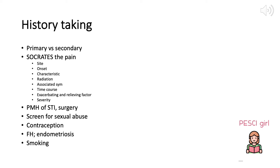We start history taking with SOCRATES. Site: we usually expect to see pain in the lower abdomen and lower back. Onset depends on whether it is primary or secondary — it can happen with menarche or about one year after. With each cycle, if it's primary, pain happens one day before menses and is usually less than 72 hours. With secondary cases it can take longer to resolve. Character is usually crampy pain, with radiation to the back.